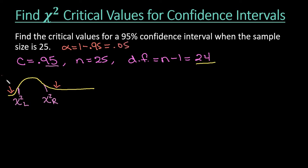And basically, what's going to happen is half of our alpha is going to be here, and half of our alpha is going to be here. So we would have 0.025, because half of 0.05 is 0.025, and we would have half of it there.